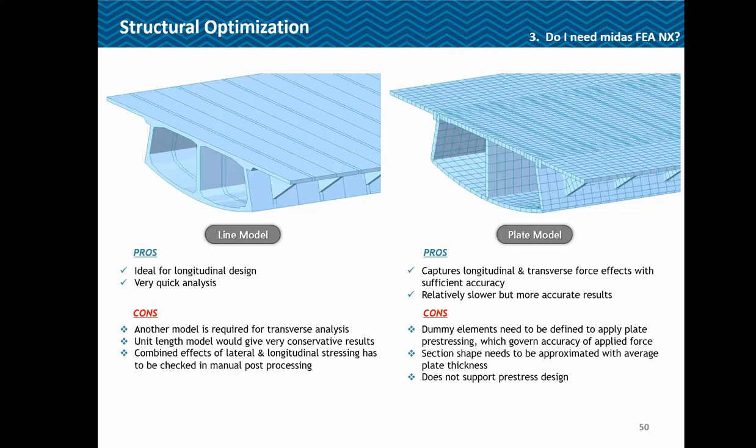Another thing is structural optimization. In most situations we go for a line model which is ideal for longitudinal design and very quick in analysis. But for a structure with a wide deck and flanges, it won't be recommended to only model a longitudinal line model — another model is required for transverse analysis. A line model for transverse analysis generally gives very conservative results. The lateral and longitudinal effects of stressing would have to be combined manually in post-processing. The answer would be a plate model, which captures longitudinal and transverse effects with sufficient accuracy and is relatively fast.